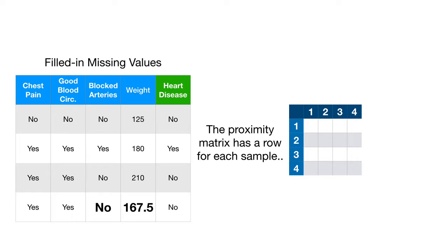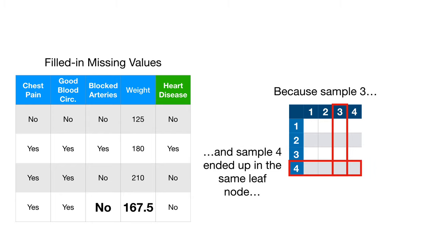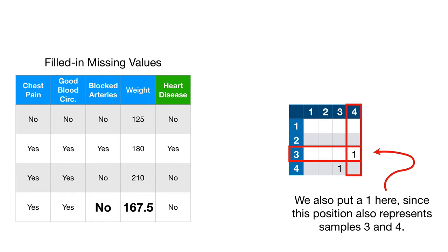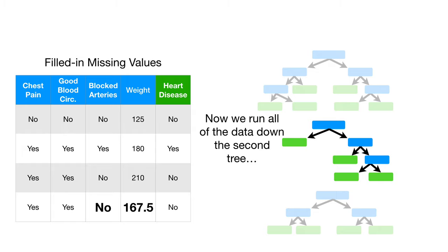We keep track of similar samples using a proximity matrix. The proximity matrix has a row for each sample, and it has a column for each sample. Because sample three and sample four ended up in the same leaf node, we put a one here. We also put a one here, since this position also represents samples three and four. Because no other pair of samples ended in the same leaf node, our proximity matrix looks like this after running the samples down the first tree.